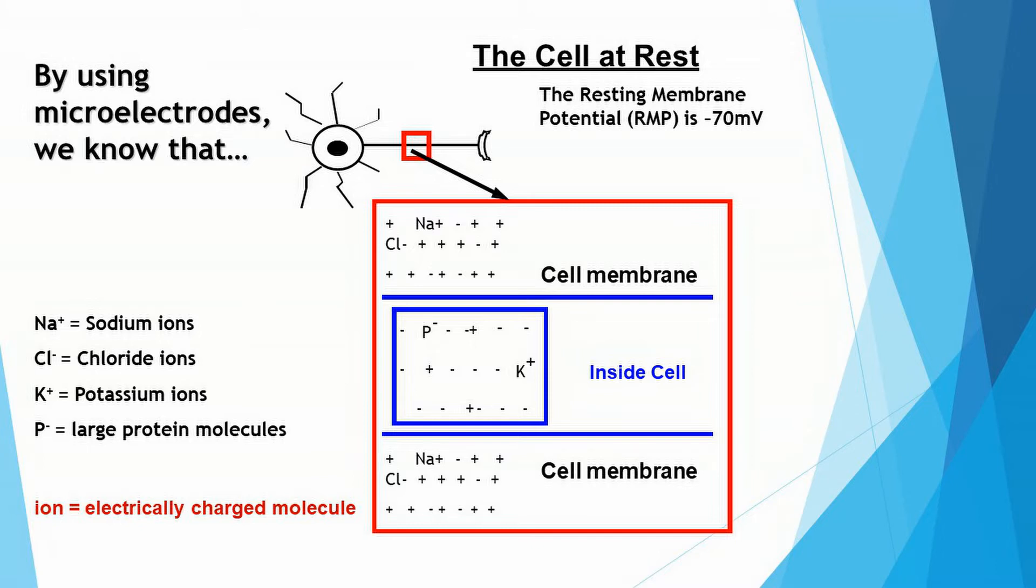And these are intended to represent ions. An ion is an electrically charged molecule. It could have a positive charge or a negative charge. And there are different types of ions. There are sodium ions with a positive charge, chloride ions with a negative charge, potassium ions with a positive charge. And inside this cell, there are also large protein molecules with a negative charge.